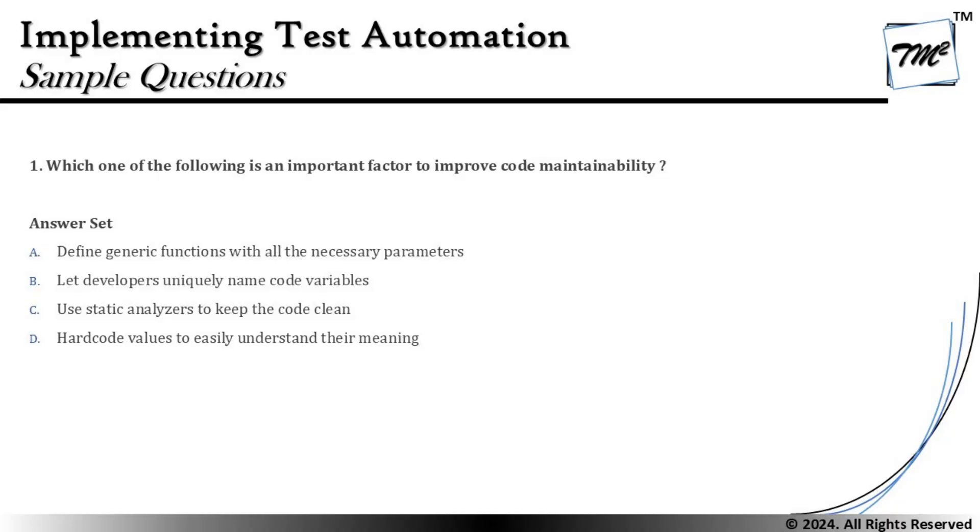The very first question we have from this chapter is right here on our screen, and the question is about which one of the following is an important factor to improve code maintainability. At this point you should start recalling what maintainability is about and what can help us improve it. Maintainability means the code can be rectified, updated, and modified as and when desirable.